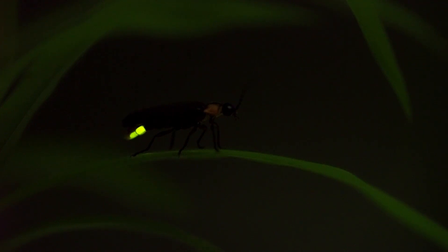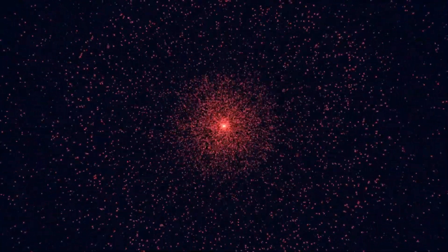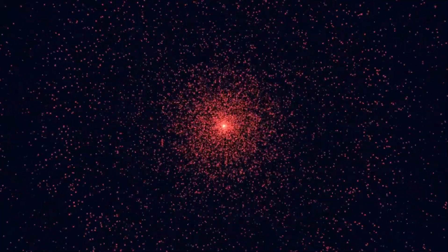Betelgeuse is a red supergiant, a type of star in the final stages of its life cycle, located around 642 light-years away from Earth. It is one of the largest and brightest stars in the Milky Way, about 700 times the size of the Sun and over 10,000 times more luminous.